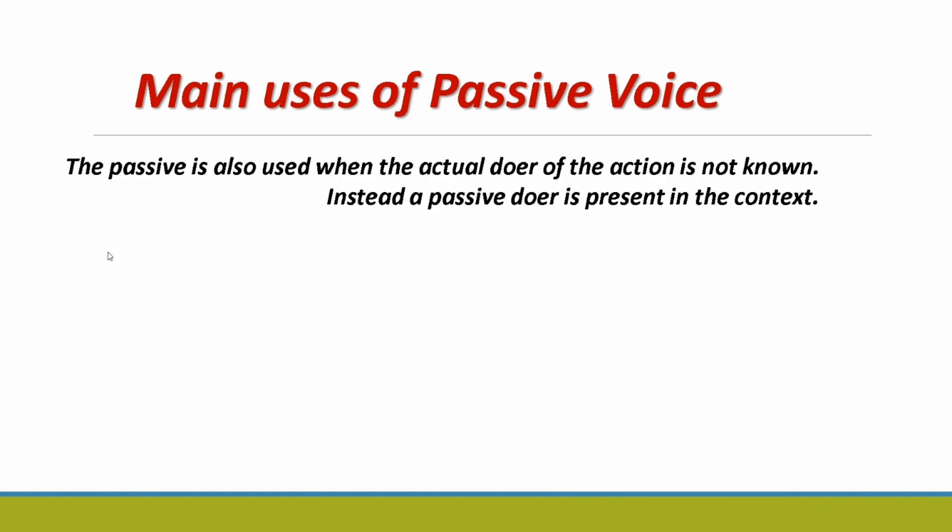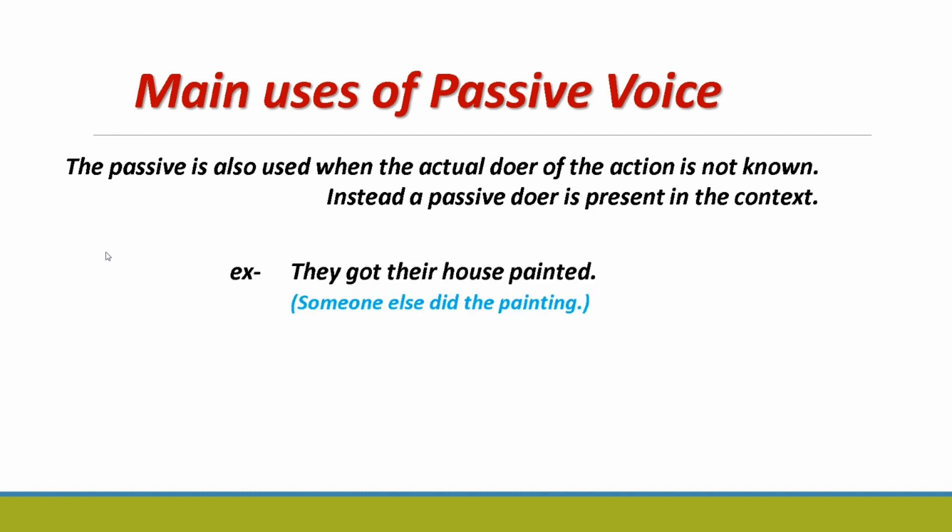The passive is also used when the actual doer of the action is not known, or a passive doer is presented in context. Passive construction is used when the person who does the work is not known or need not be mentioned. For example: 'They got their house painted' — someone else did the painting; it's obvious who painted the house, so it's not necessary to mention them. Next: 'I had my car serviced' — my car got serviced by someone.